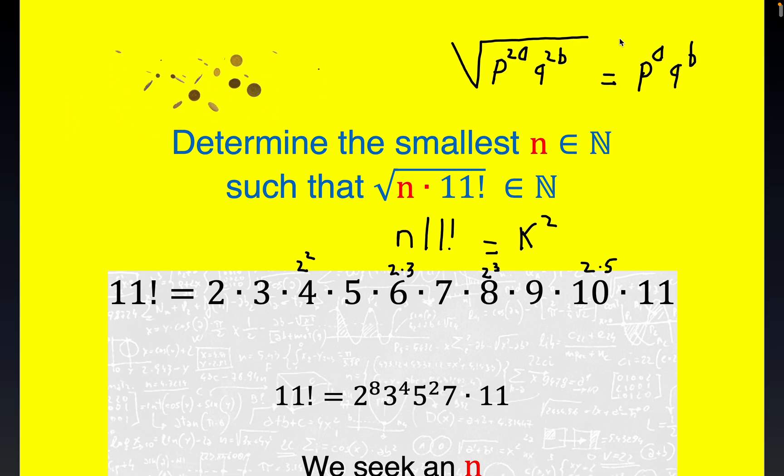Now as far as this goes up here, we're pretty close to this being a square already, see? This two to the eighth is two to the fourth quantity squared, three to the fourth is three squared quantity squared, and of course five squared is already a square. So we have these two extra non-squared elements, seven and eleven primes.